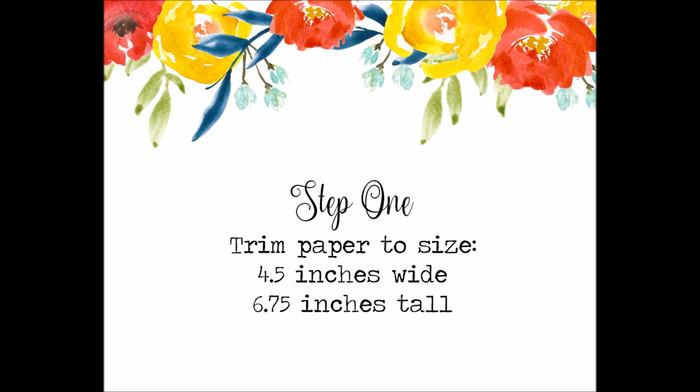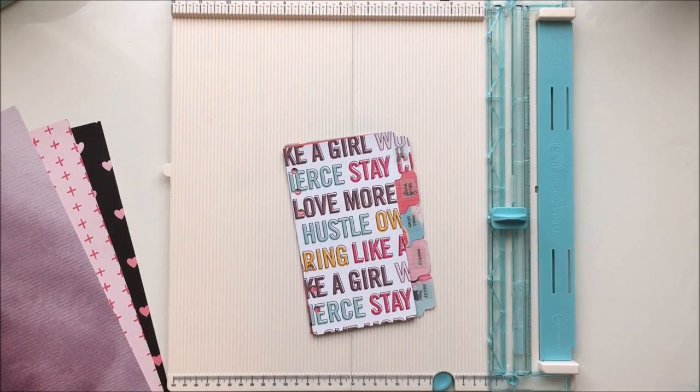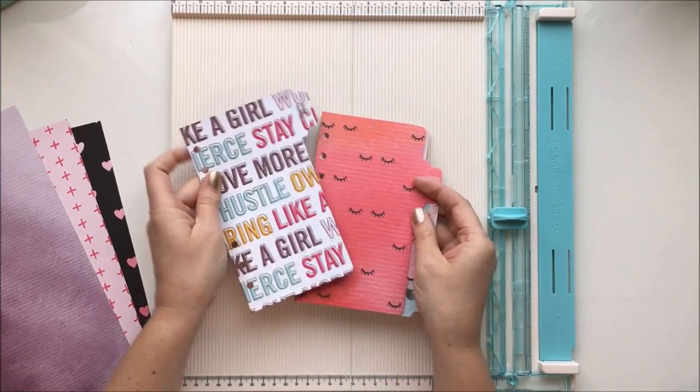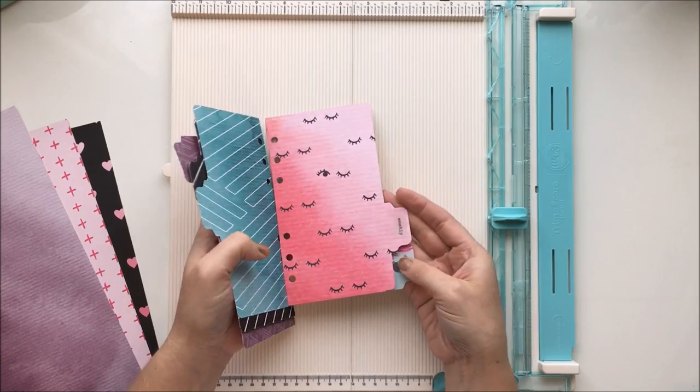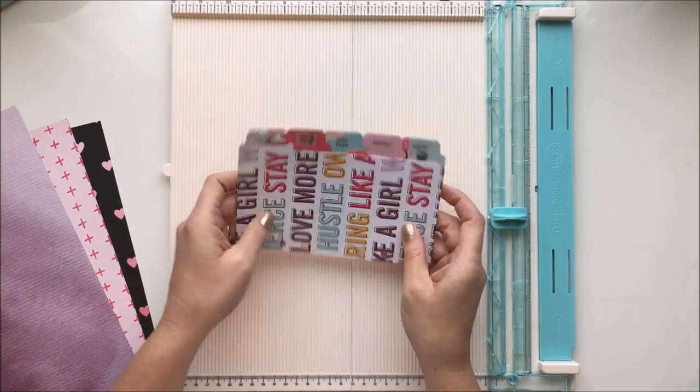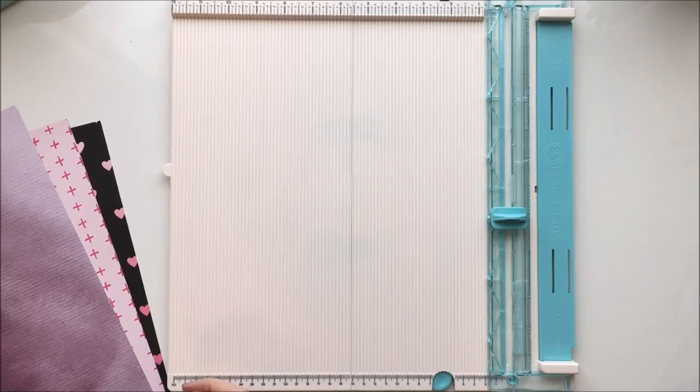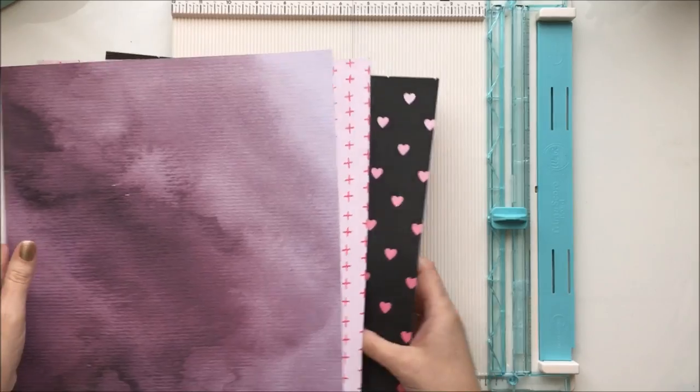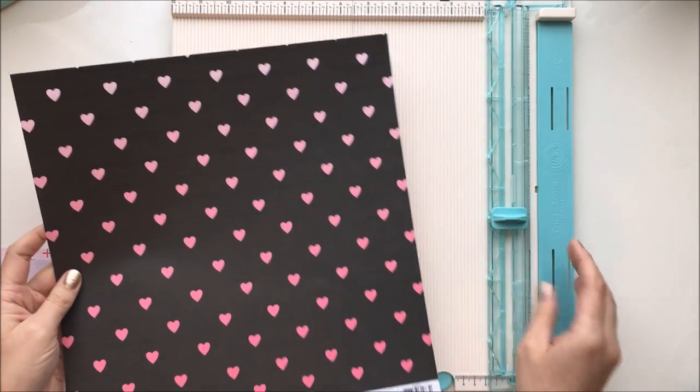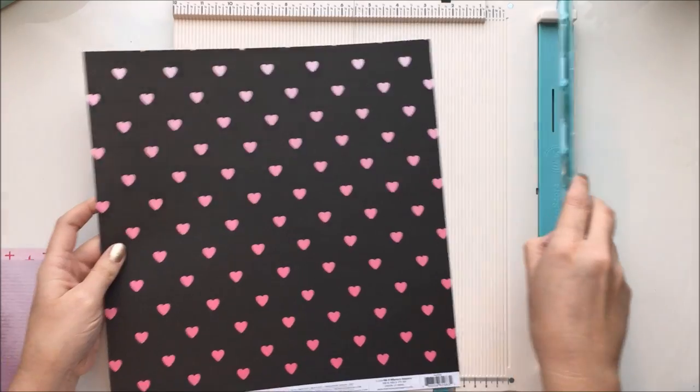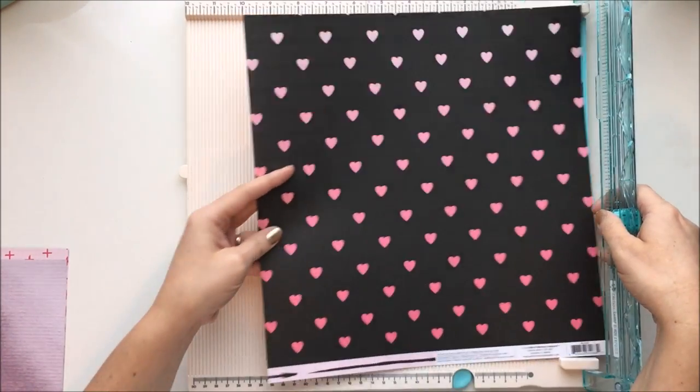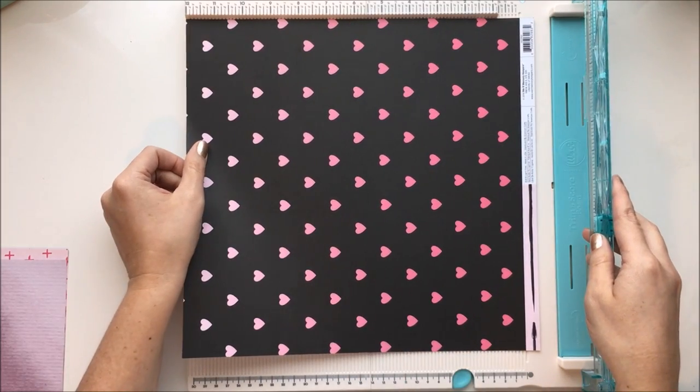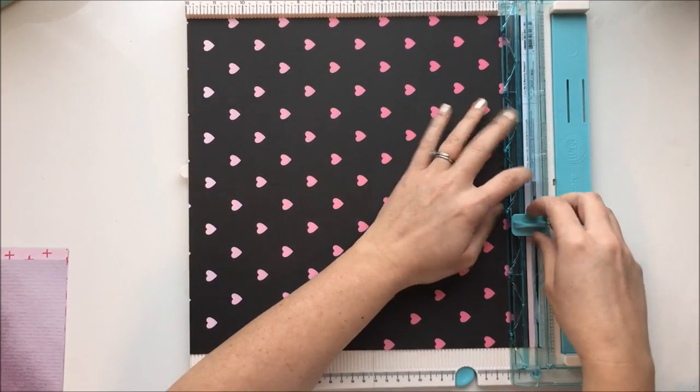Step one is to trim your paper to size. The tabs are about three quarters of an inch tall and so you're going to want to start with pieces of paper that are six and three quarters inch tall and four and a half inches wide. So personal size planner page is about three and three quarters wide and that extra three fourths of an inch is what we need for the tab. When you have these dividers in your planner, the pages are going to be flush with the edge of the divider and then the tab just extends from there.